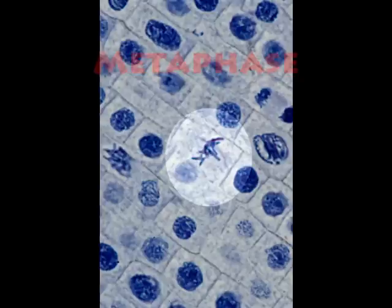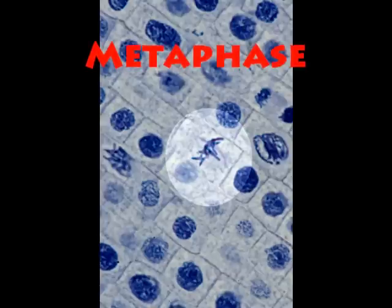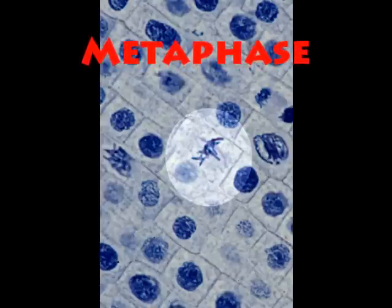Metaphase: Chromosomes align at the center of the cell. The spindle fibers attach to the chromosomes, and they begin a tug of war by pulling each chromatid in opposite directions.